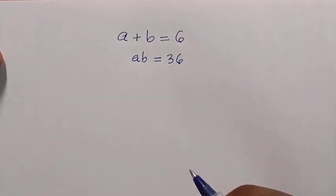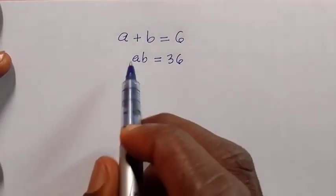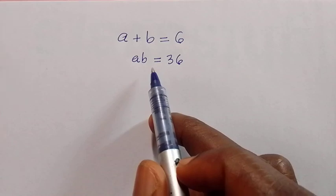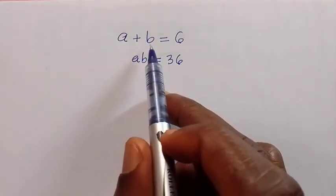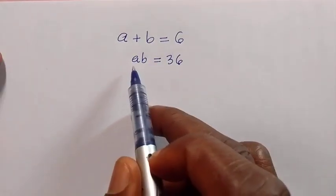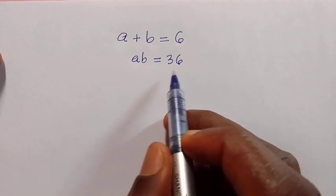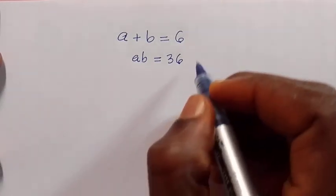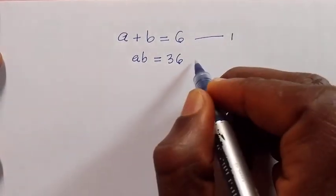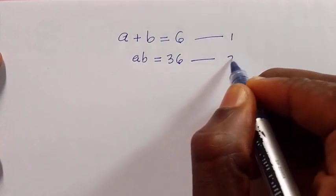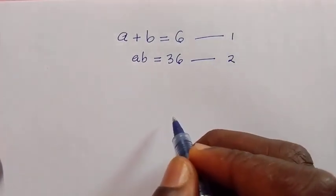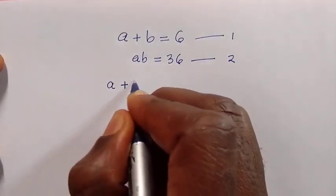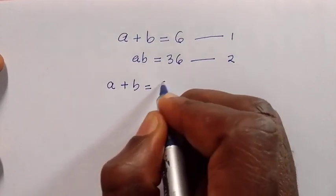Good day viewers, you are welcome. How to find the value of a and b in this system of equations, where we have a plus b equals 6 and ab equals 36. To solve this, we consider this as equation 1 and this as equation 2. Then from equation 1 we have a plus b equals 6.